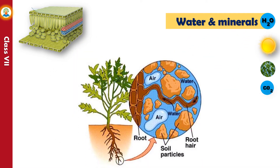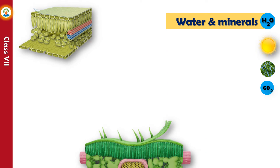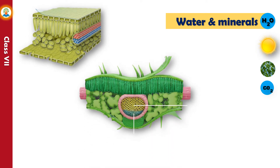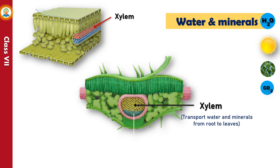The roots of plants absorb water and minerals dissolved in the soil with the help of root hair. Water and minerals from the soil are absorbed by the root hair and transported to the leaves through a tissue called xylem.